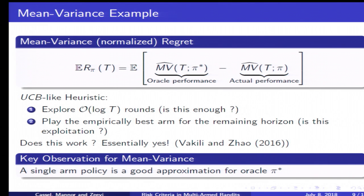But nonetheless, in a somewhat recent work, Vakili and Zhao show that essentially this scheme works for the mean variance, and they achieve an order of log t over t regret and show that this is asymptotically optimal. The key observation they make is that while the oracle policy is not simple, it is well approximated by a simple policy that chooses a single arm.